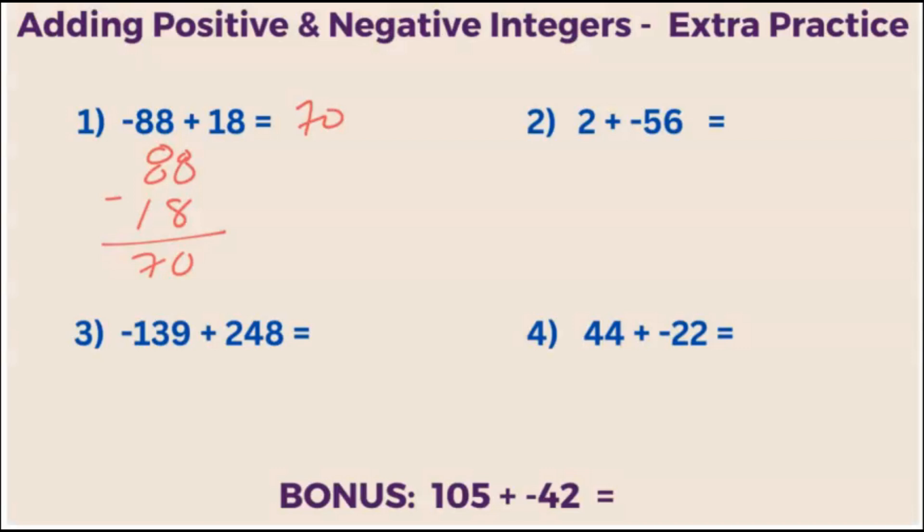We look at the absolute values of our integers. Is 88 greater than 18? It is. So we take the sign of that integer, which is negative. So negative 88 plus 18 is equal to negative 70.